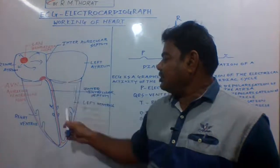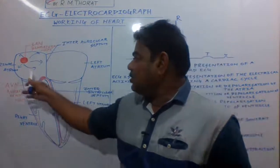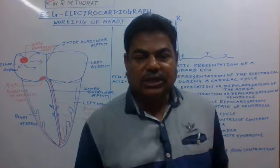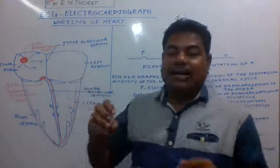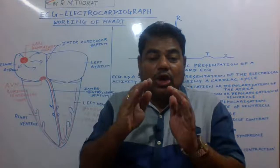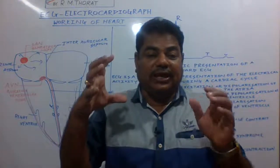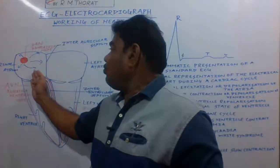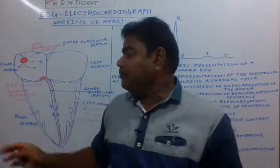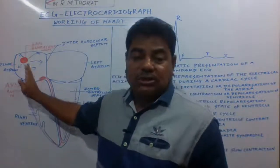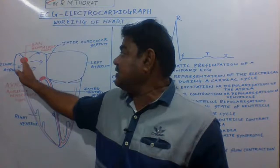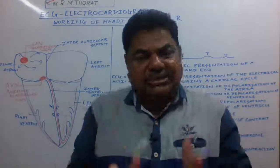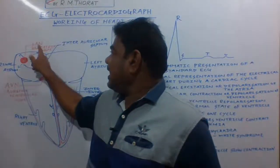Now oxygenated blood from the left atrium is forced into the left ventricle, and deoxygenated blood from the right atrium is forced into the right ventricle. The left atrium receives oxygenated blood and the volume of blood increases into the left ventricle. It exerts a pressure on the wall of the right atrium, where on the anterior right side one node is present. That node is made up of cardiac muscle.